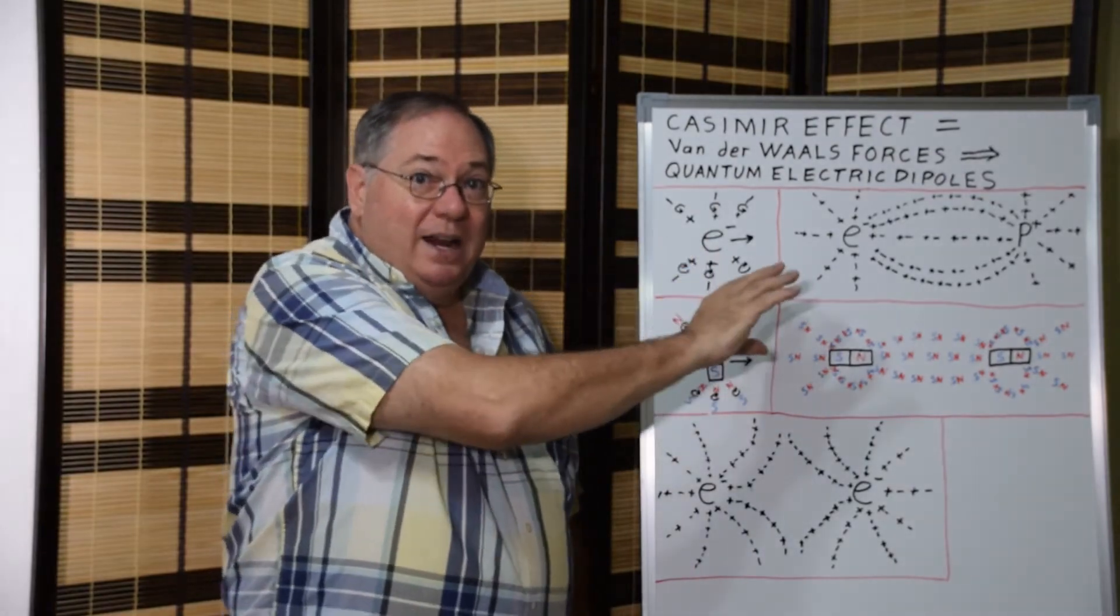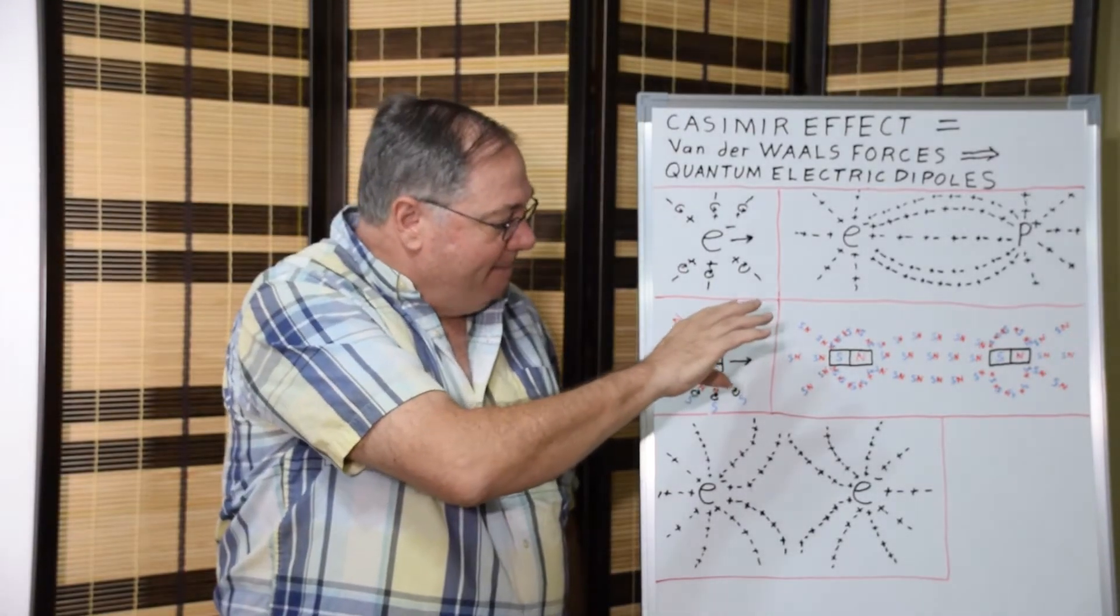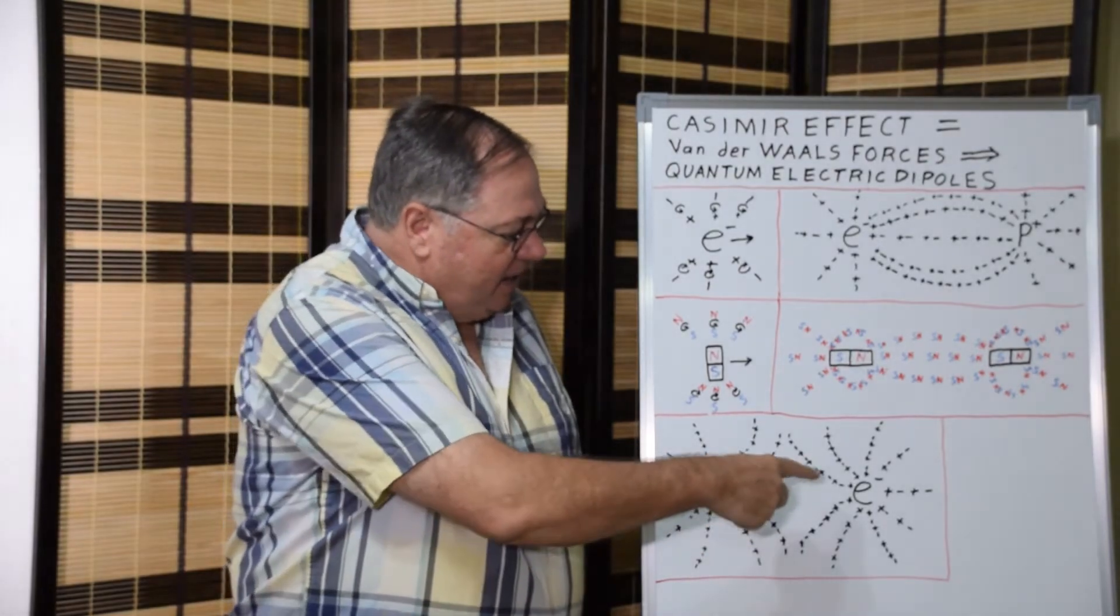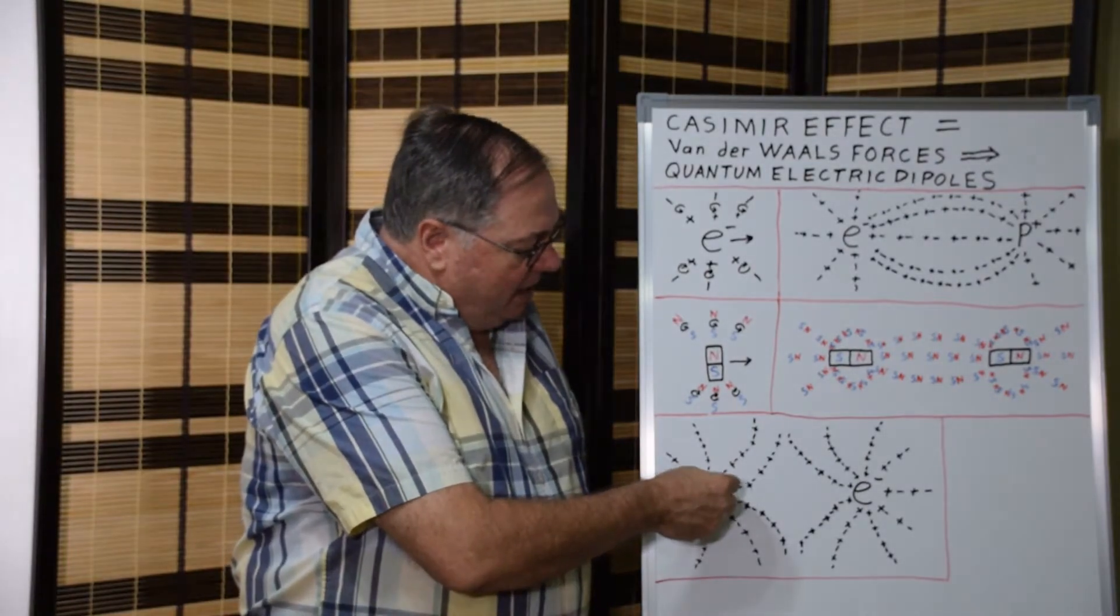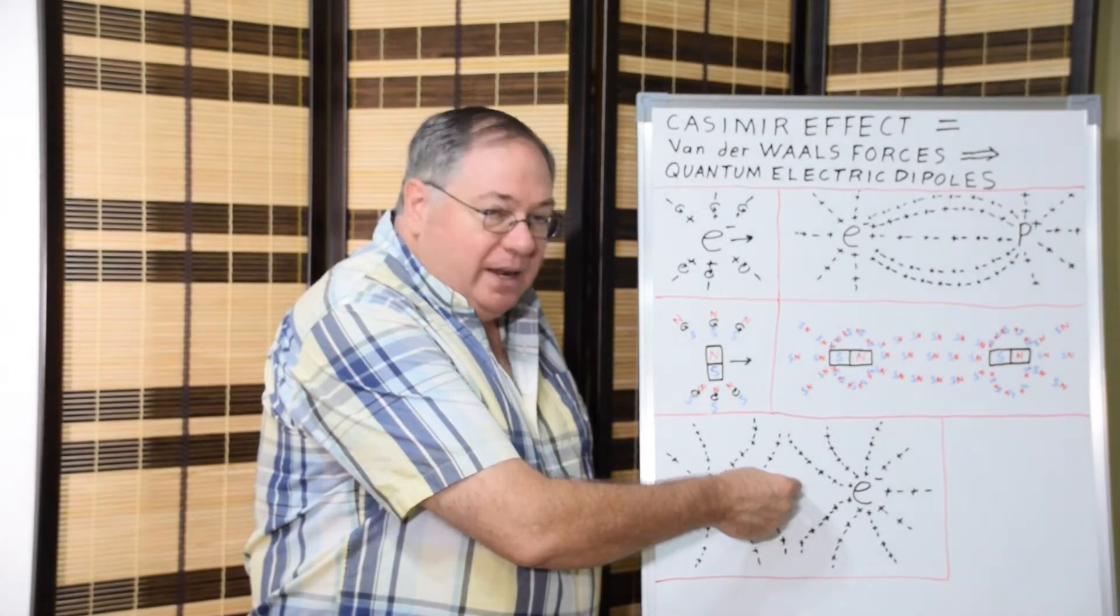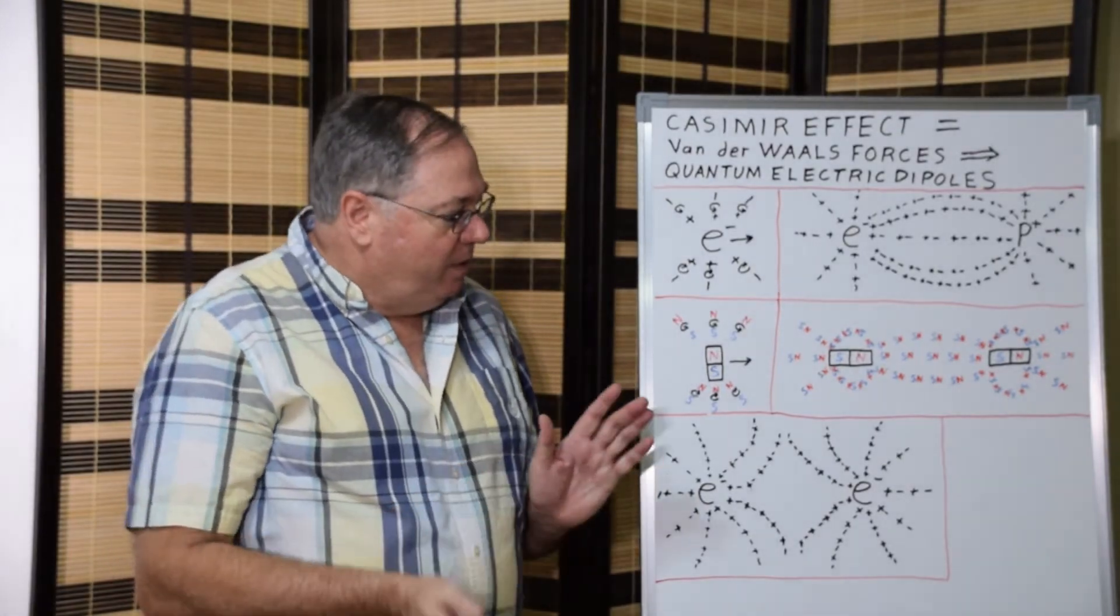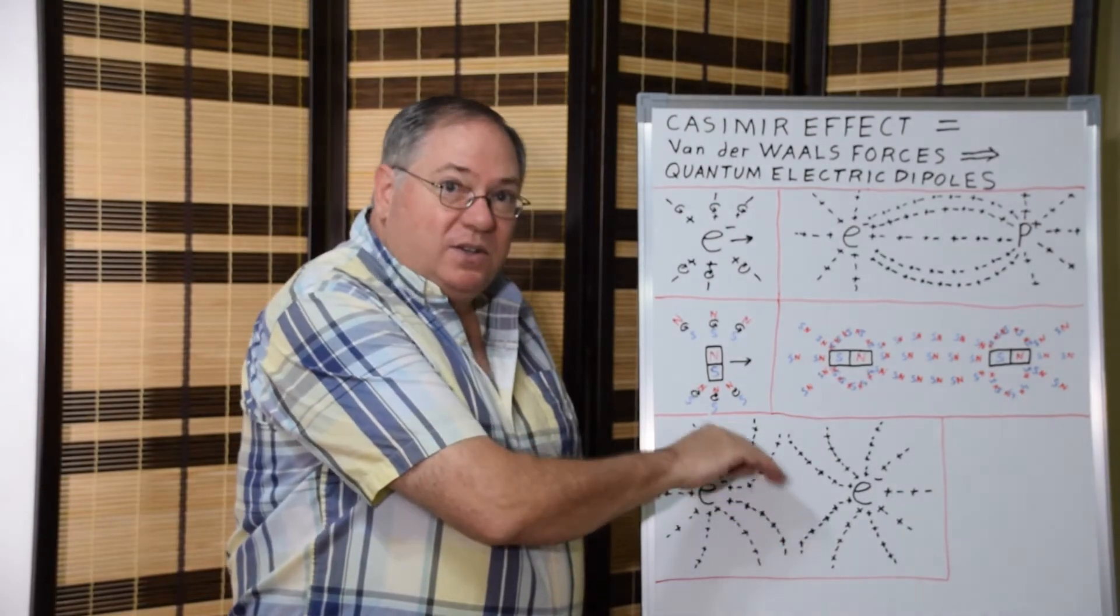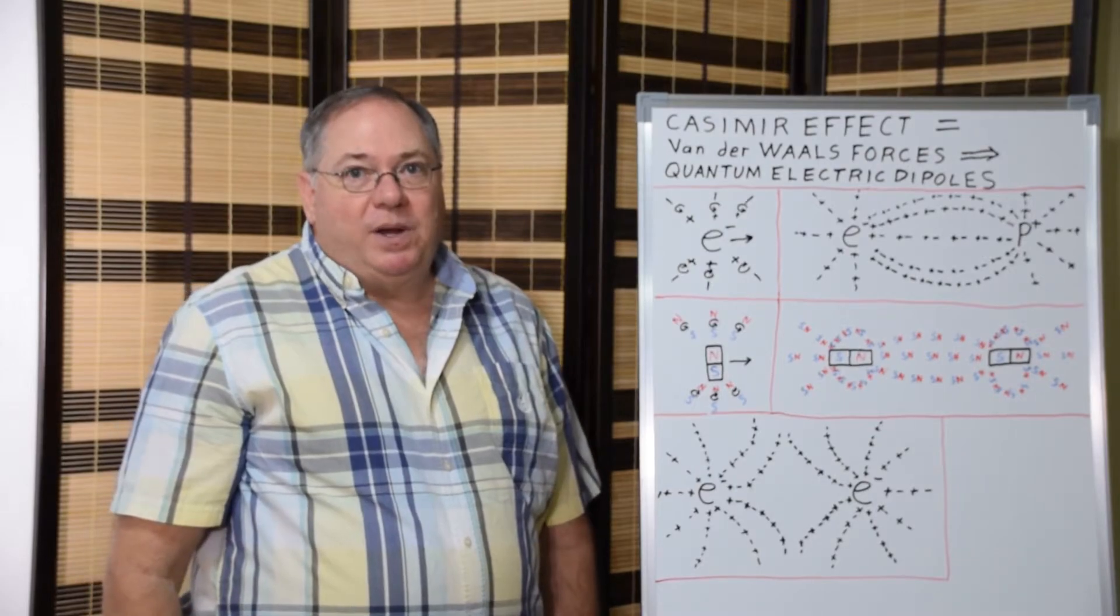So once again, we have real magnetic fields caused by real quantum dipoles in space. And then we can look at the repulsive configuration, this time between two electrons. And because of the way the dipoles line up, you end up with like charges opposite each other in the center, which causes them to repel. And when they repel, they deflect outward. And that creates these curved field lines that are the typical Faraday field lines between electrostatic charges.